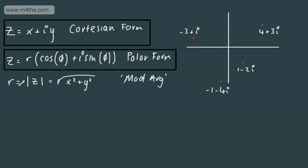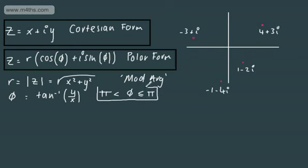Theta is the argument, and this is given as the inverse tan of y over x. And our principal value, this is what we call our principal argument, is given where theta is going to be strictly greater than minus pi but less than or equal to pi. We will have multiples of 2 pi on top of our principal argument.